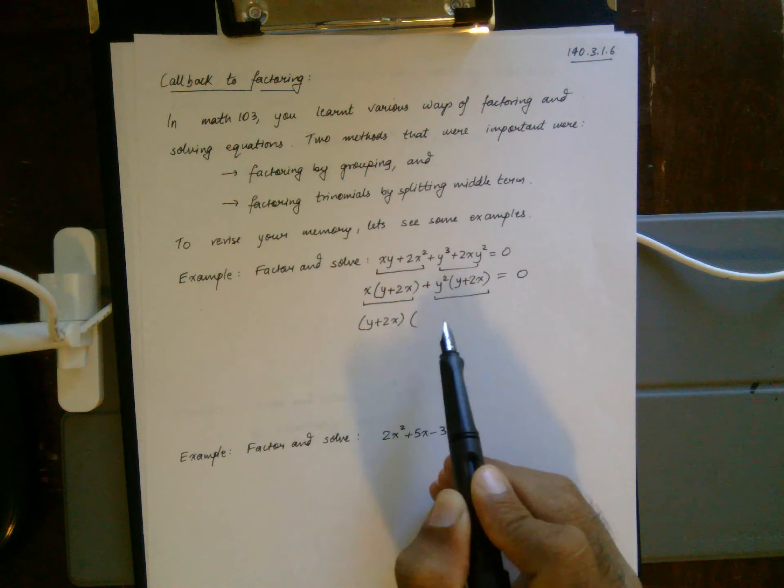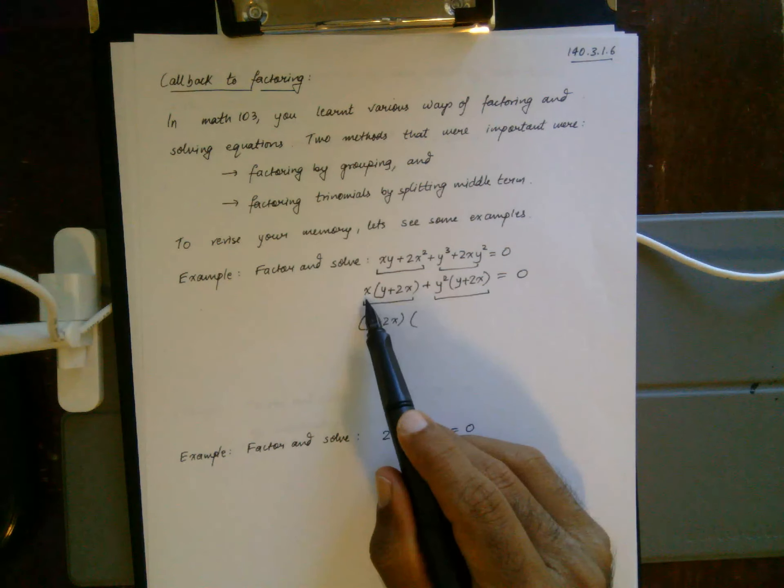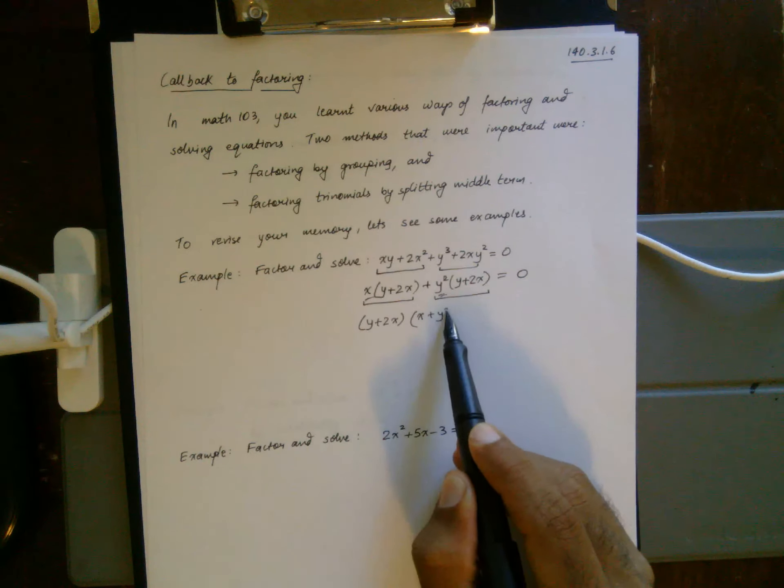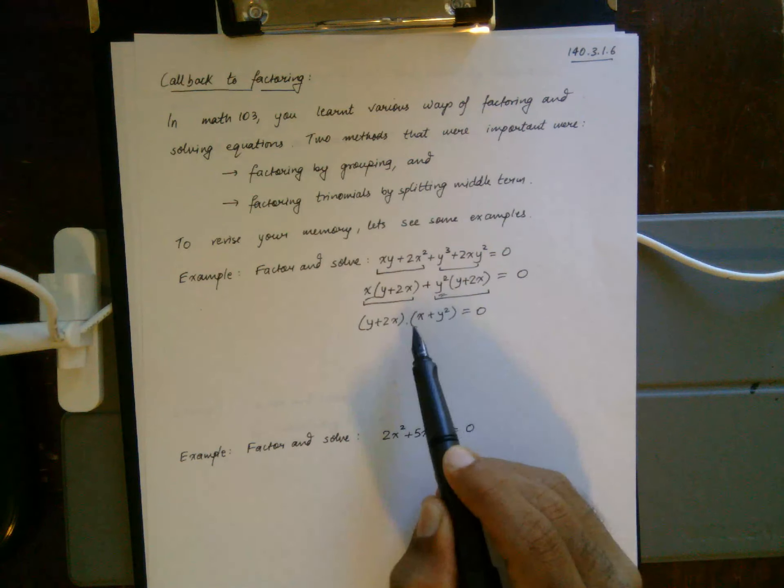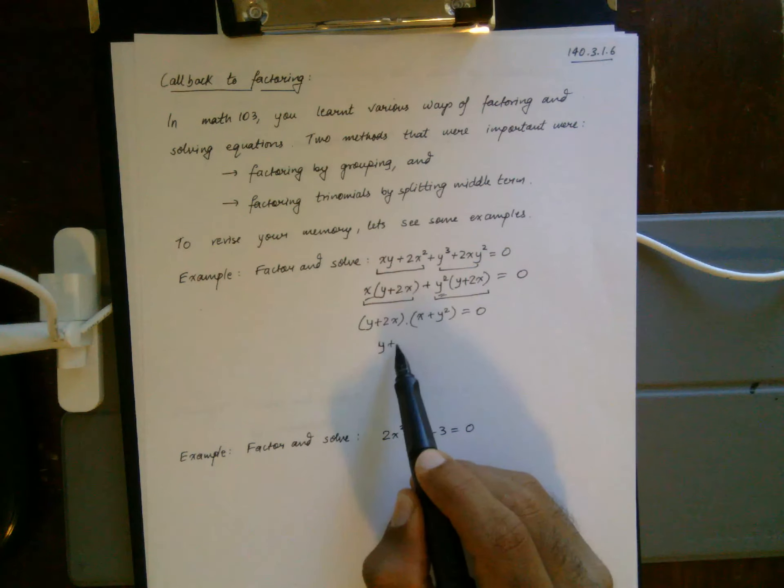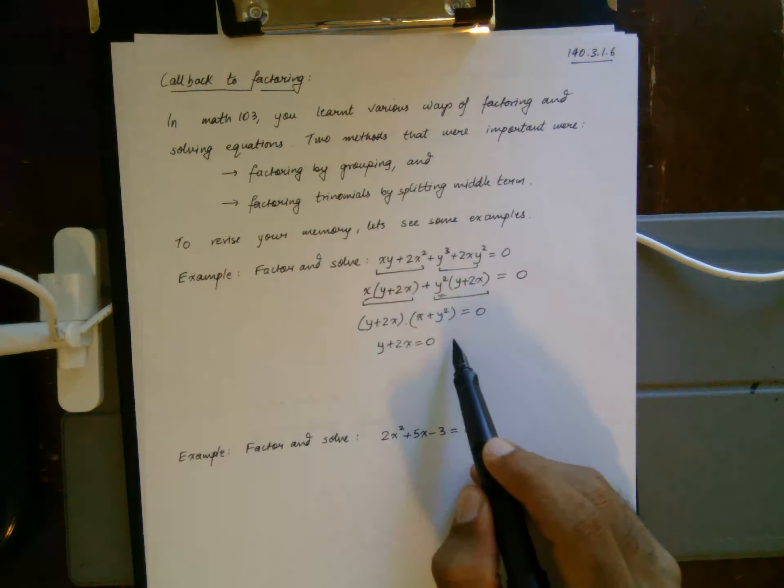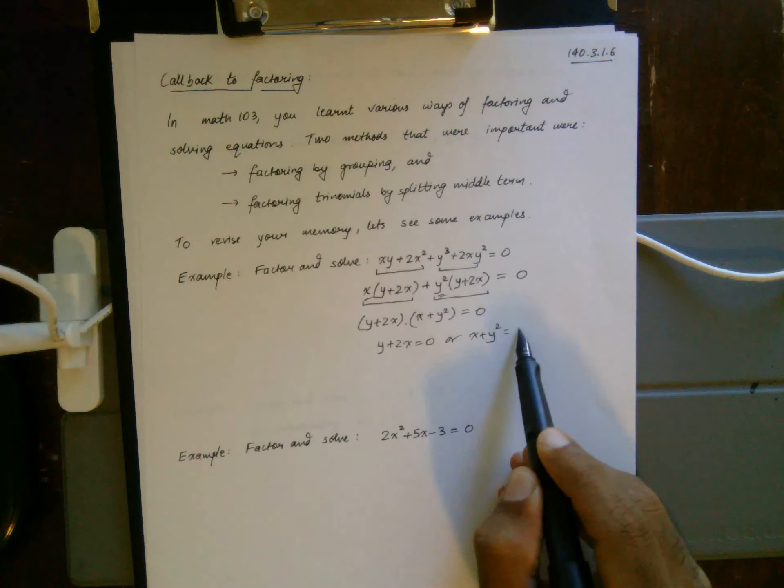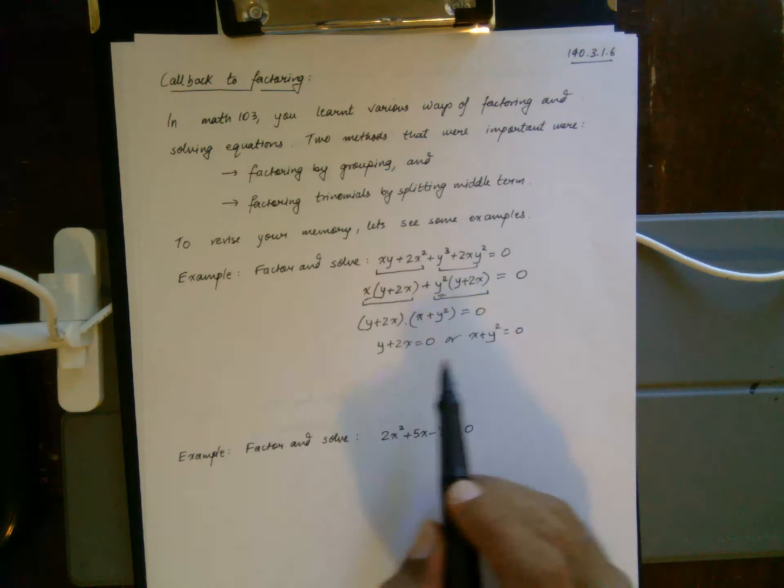So you can factor that out and you're left with x plus y². Now when you have the product of two things equal to 0, you need to have one of them equal to 0, so that's going to be your solution.